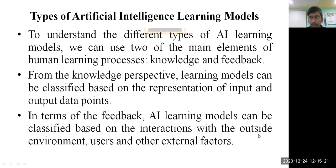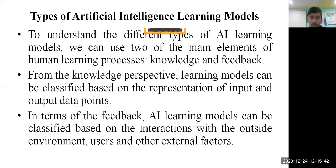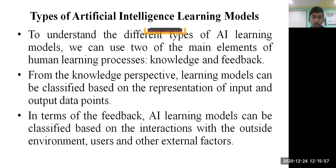To understand the different types of machine learning or AI learning models, we can use many approaches. There might be different approaches like supervised learning, unsupervised learning, and different types of learnings. Basically in machine learning there are 14 types of learning. They are classified based on two types of human learning process: one is based on knowledge and the other is based on feedback.